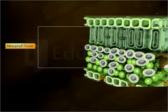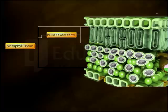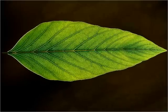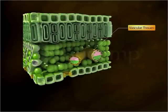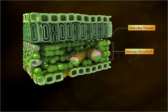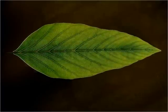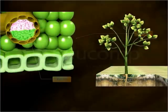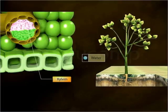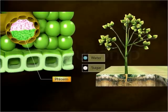The mesophyll tissue is an internal part of the leaf where the process of photosynthesis takes place. It consists of two layers: the palisade mesophyll, which is the upper layer, and the spongy mesophyll, which is the lower layer. The veins are the vascular tissues of the leaf, located in the spongy mesophyll. These veins are arranged in a specific branching network called venation. Veins comprise both xylem and phloem. Xylem carries water and mineral salts from the roots to the leaves, and they diffuse out to the surrounding mesophyll cells.